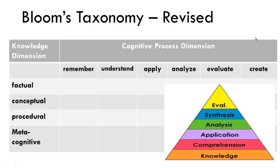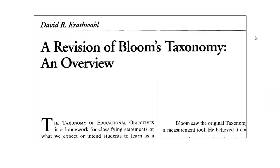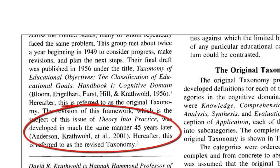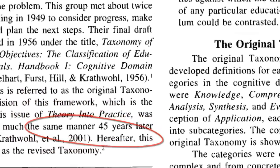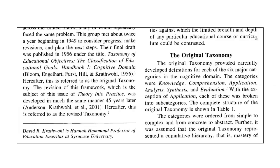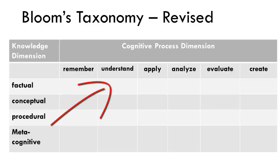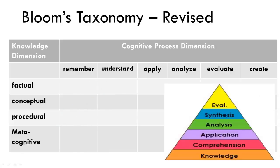This is where we left off in the last video. Hopefully you have read the Krathwohl paper and considered the differences between the original taxonomy and this revised work put forth by Anderson, Krathwohl, and colleagues almost 45 years after the original. The revised version is multi-dimensional, focusing on the types of knowledge in one dimension and the cognitive processes in another. Comparing to the original hierarchical format, there are several differences.